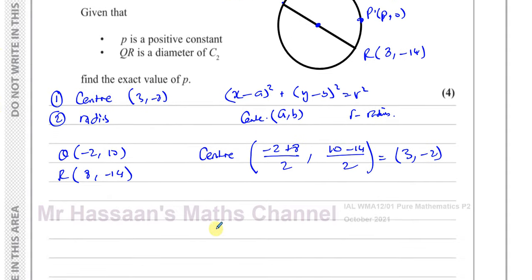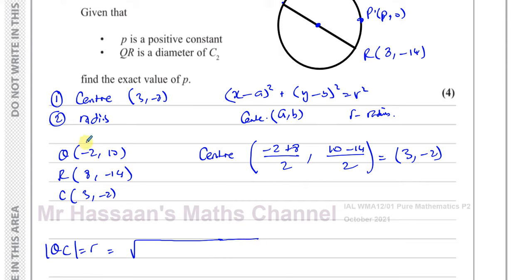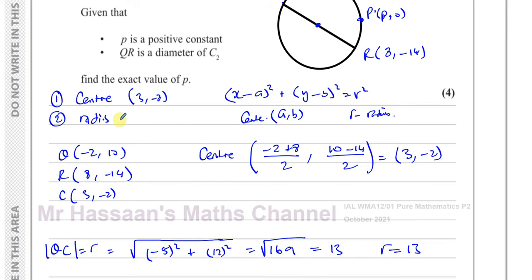For the radius we can use the distance from the center (3, minus 2) to point Q (minus 2, 10). The change in x is minus 5 and the change in y is 12, so the radius equals the square root of 5 squared plus 12 squared, which is the square root of 169 — that's a 5, 12, 13 triangle — giving a radius of 13.